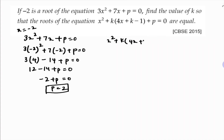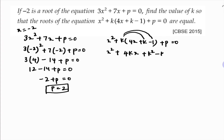Now for the second equation: x² + k(4x + k - 1) + p = 0. I'll write this in standard form: expanding gives x² + 4kx + k² minus k + p. Substituting p = 2, I get x² + 4kx + k² minus k + 2 = 0. They told us the roots are equal, so the discriminant must be zero.